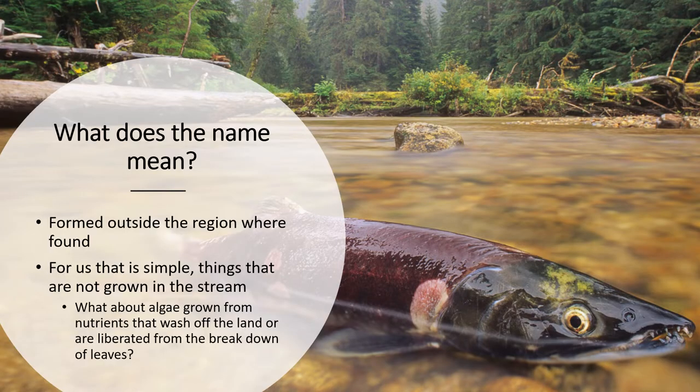So what does the name mean? These are materials that are formed outside the region where the stream is located — you can think of that as anything that's not under the water. This has a lot to do with terrestrial plants, although there are a number of other very important sources of energy that enter the stream from outside that we're going to cover as well.